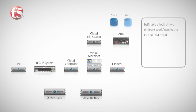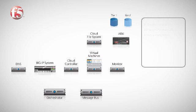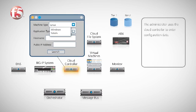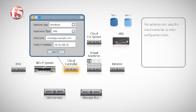Let's see how the F5 and IBM cloud works by taking a look at the automation of two typical provisioning workflows. In this example, a server administrator manually initiates a workflow. Using the cloud controller, the server administrator enters configuration data, including application type, IP address information, and other specific information about the application to be provisioned.